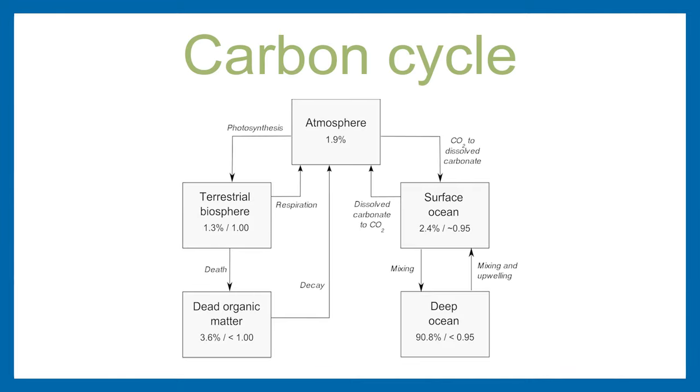This carbon-14 is formed in the atmosphere, oxidized into carbon dioxide, entering the global carbon cycle. Within this cycle, plants assimilate carbon-14 from CO2, whereas animals eat plants.